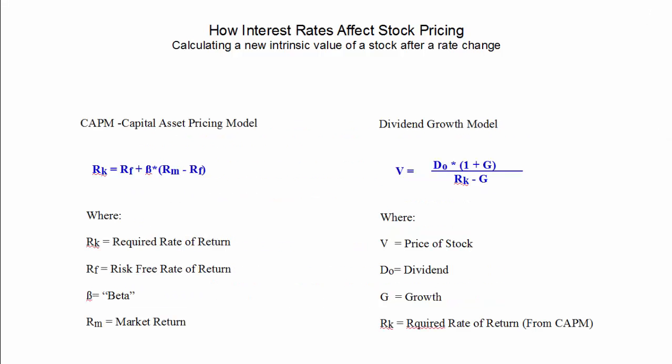On the left is the capital asset pricing model and on the right is the dividend growth model. The components of the capital asset pricing model include the risk-free rate of return, which is often the 10-year Treasury note. Once we have this information, that gives us a required rate of return which is plugged into the dividend growth model on the right. The dividend growth model takes into account the current dividend of the company and the growth rate of that dividend to give us an intrinsic value of the stock. The required rate of return in the denominator comes over from the capital asset pricing model.